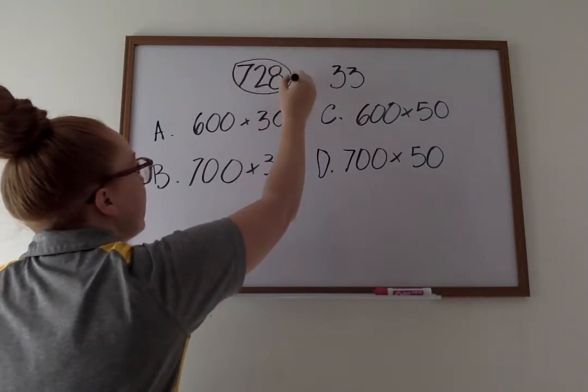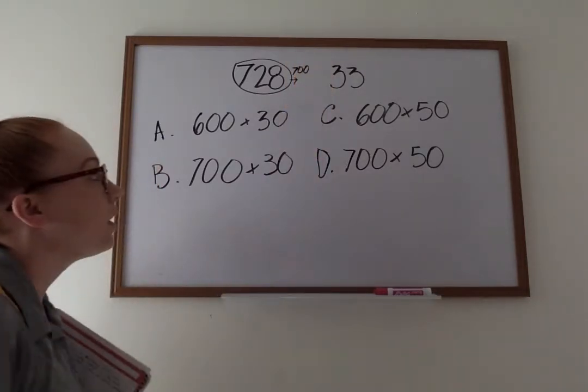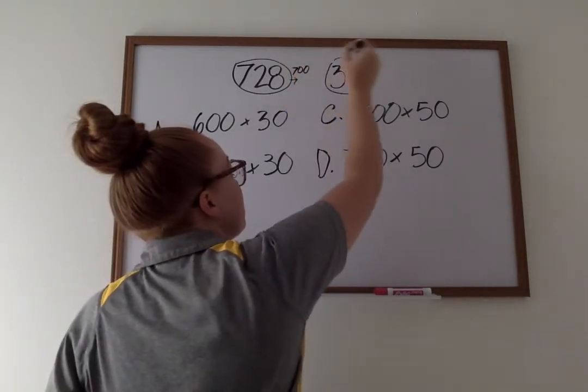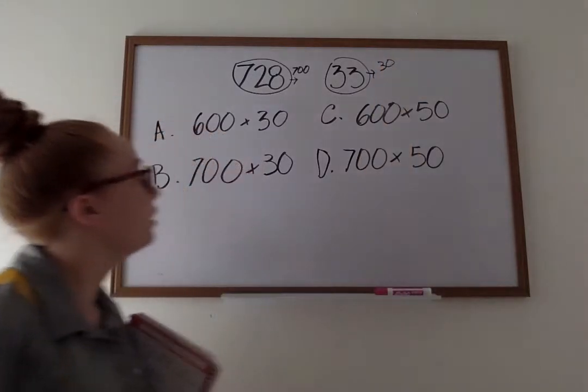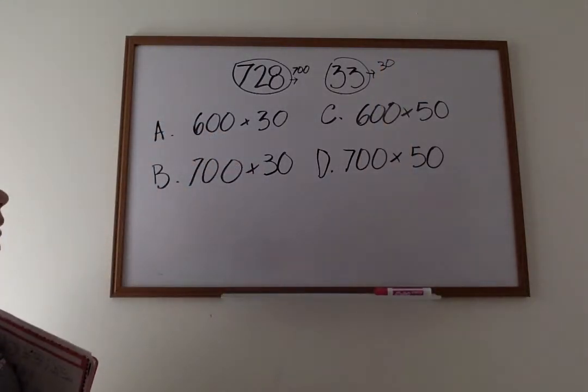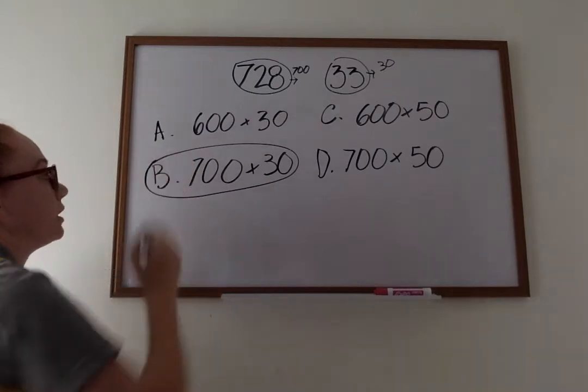728 is going to estimate into 700. 33, if we estimate this number, it's going to turn into 30. Now, which one of our problems is 700 times 30? B. B would be our correct answer.